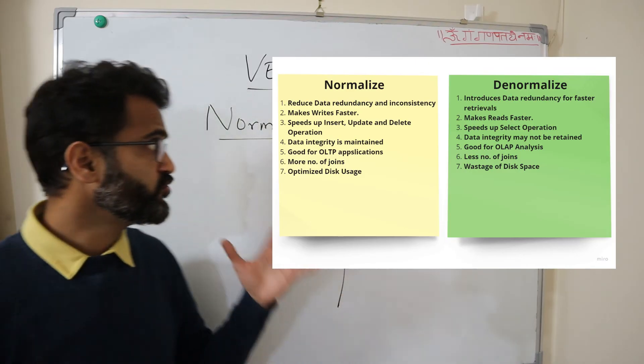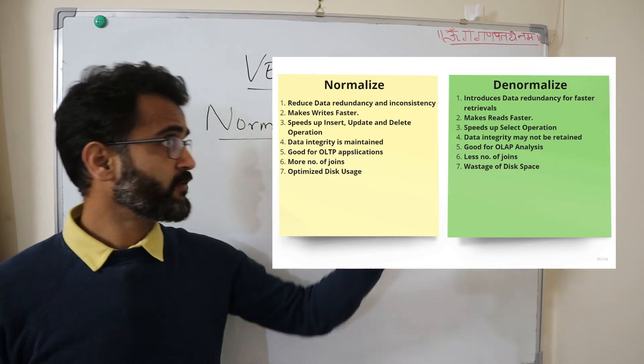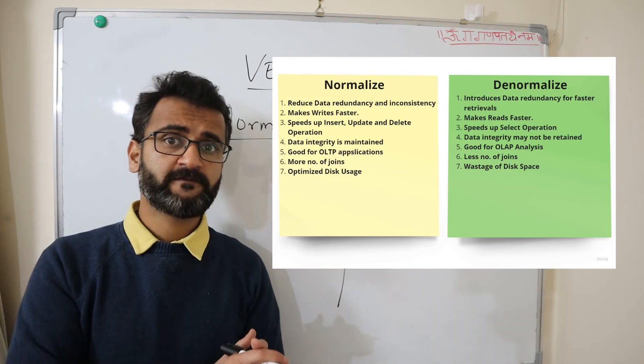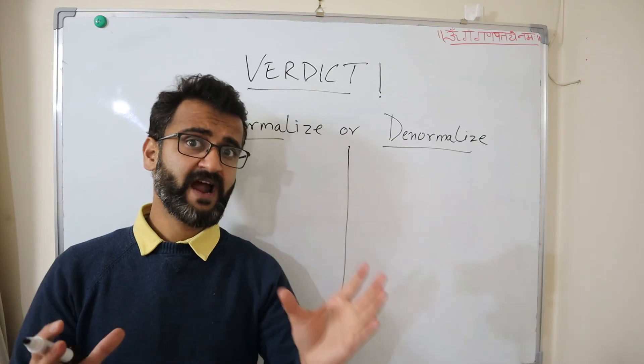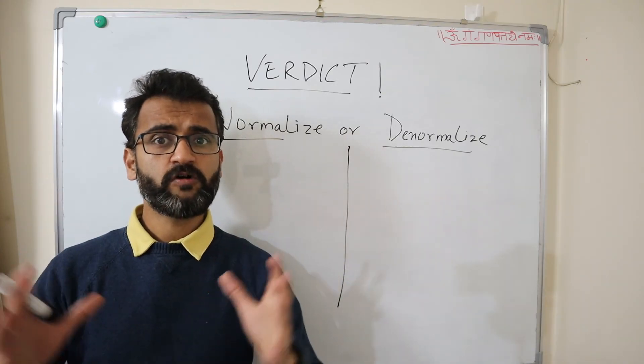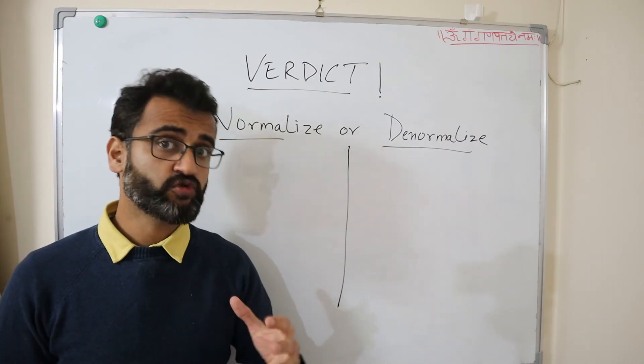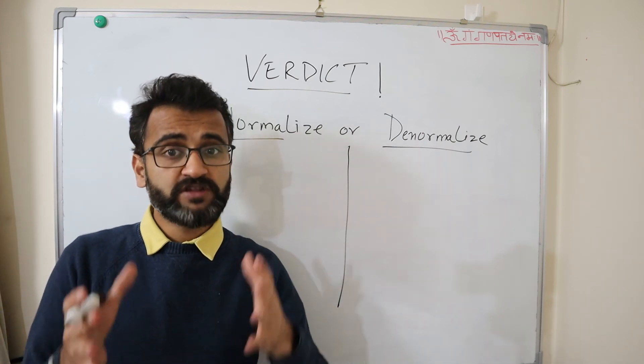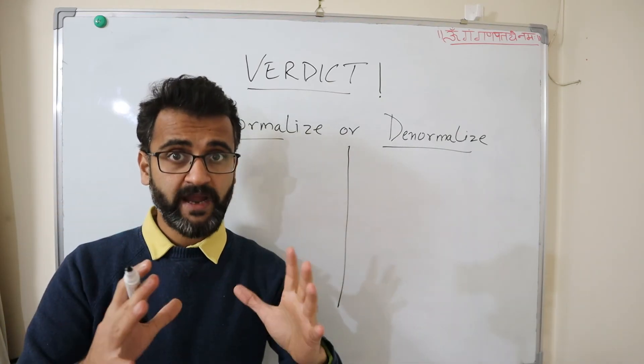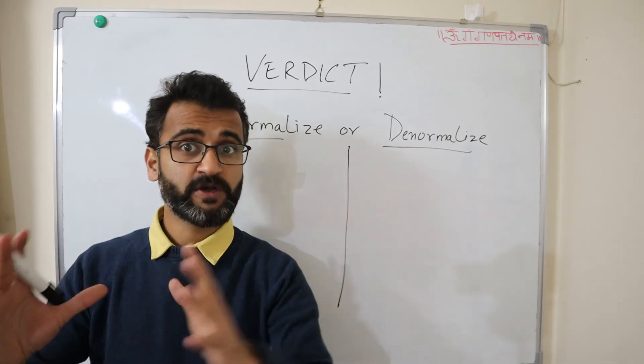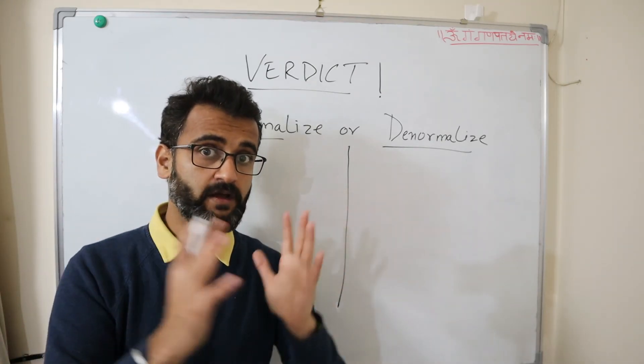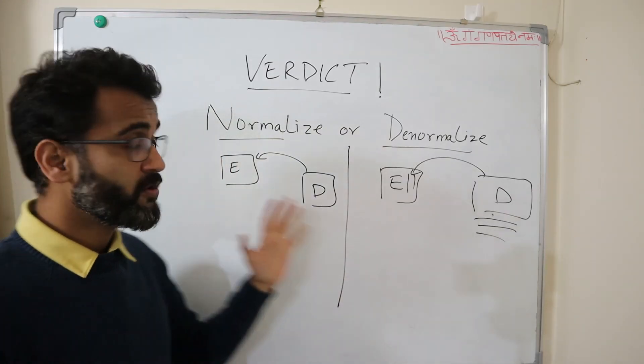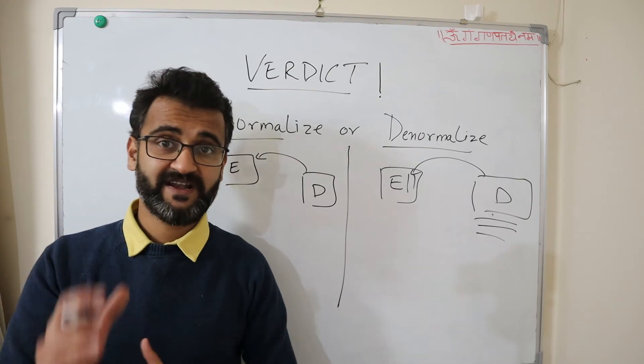At any given point of time, it is not mandatory that you have to normalize to the nth degree or you have to denormalize the data completely. You can have best of both the worlds. If we go back to our first layman example where we had three different shops, instead of combining everything into one particular register, they could have also taken a balanced approach. They could have a common register made for grocery and sweets because these two comes under edible items, and one specific separate register for clothing. So I hope we now understand what is normalization, what is denormalization and when to choose what.